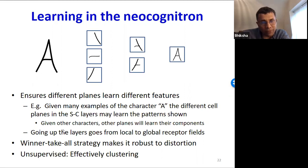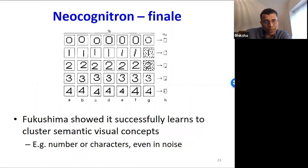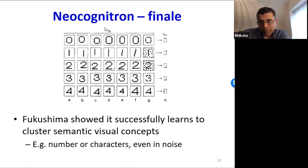If you gave this model lots of images of digits, eventually the final C-plane would show that one plane responds only to instances of zero, the second only to instances of one, the third only to two — and this response was robust regardless of minor distortions or noise. The neocognitron was automatically able to segregate visual concepts without supervision.